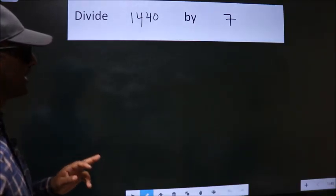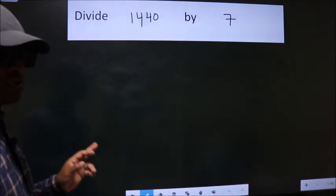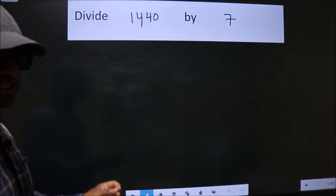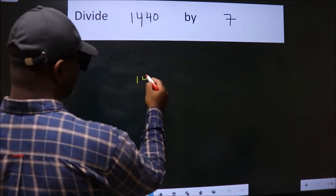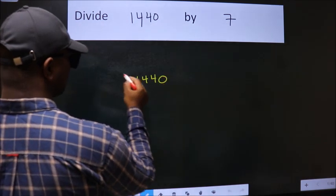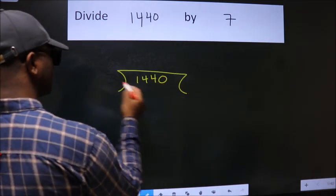Divide 1440 by 7. To do this division, we should frame it in this way: 1440 here, 7 here.